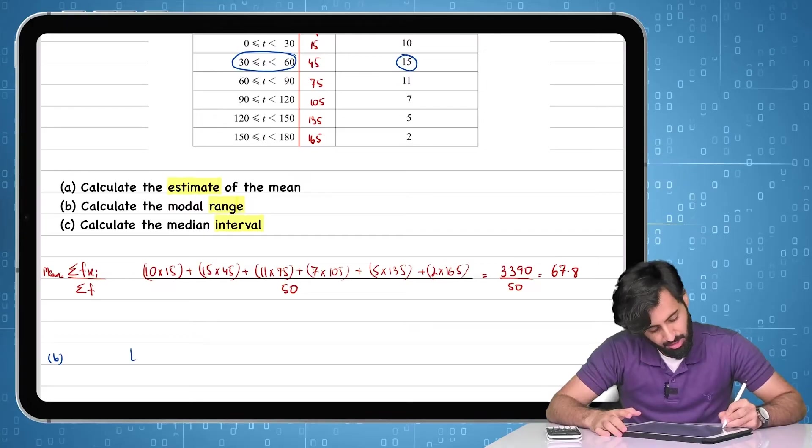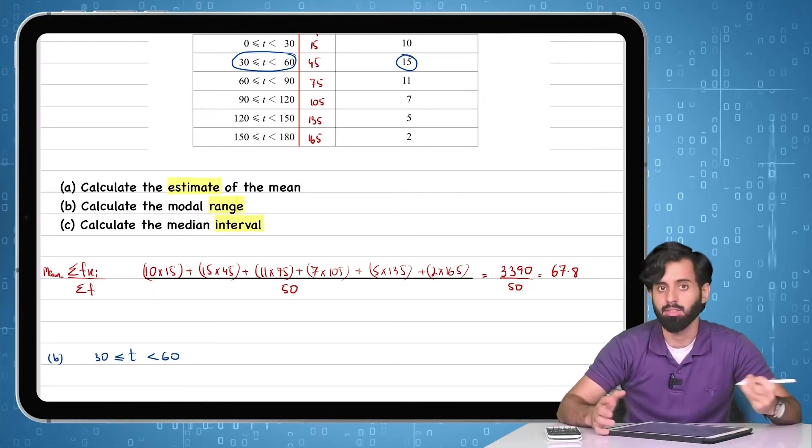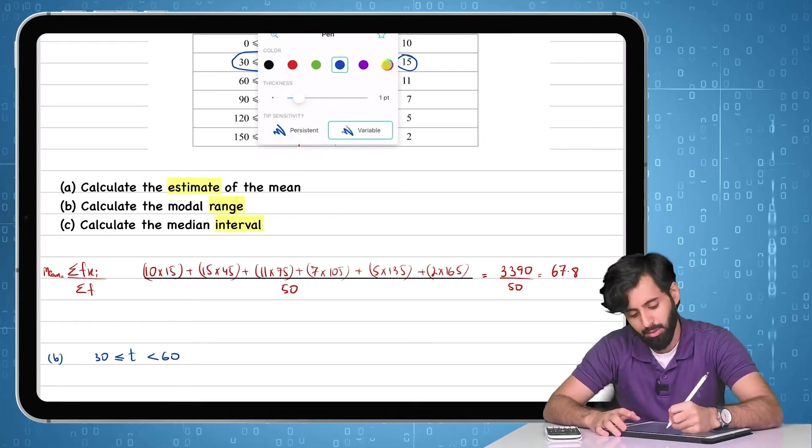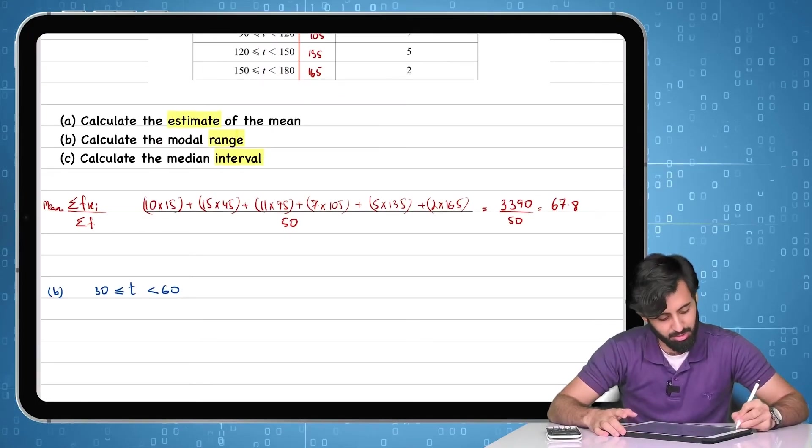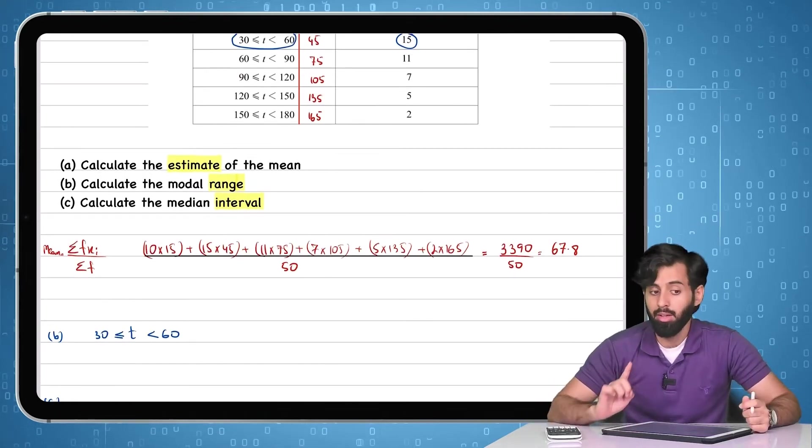So that means the modal range is greater than or equal to 30, less than 60. So this right here is our modal range. And if you look at part C, you'll notice that again, the question is not asking you to find out the median. It's asking to find out the median interval.